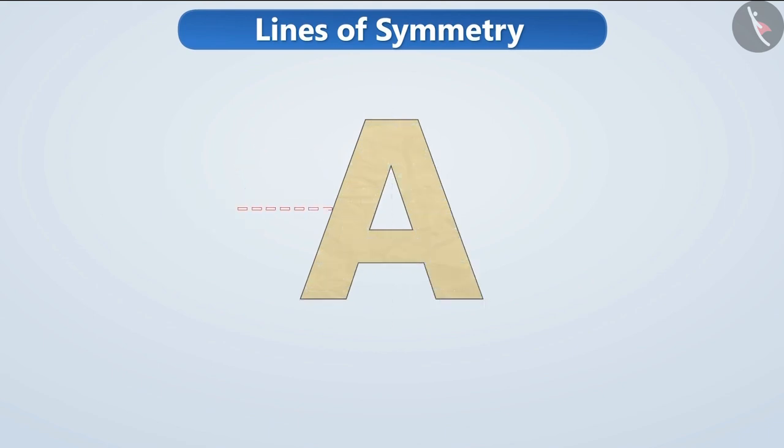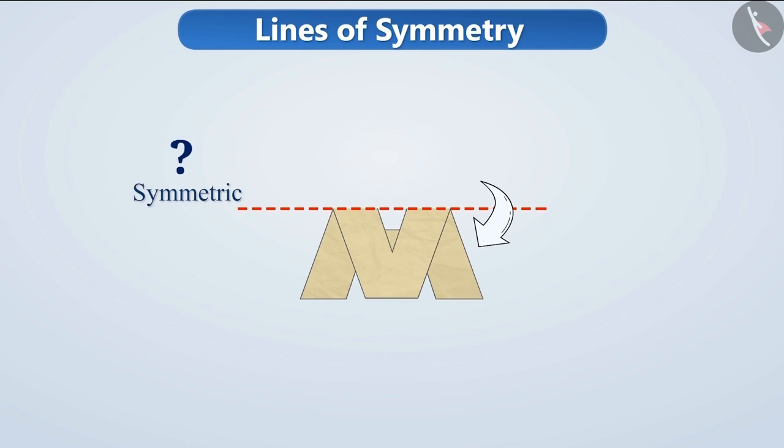Just think, if we fold A in such a way that the top half of it comes down to the bottom half, then shall we say that A is symmetric? Think for a while. Absolutely correct. This does not make A appear symmetrical.